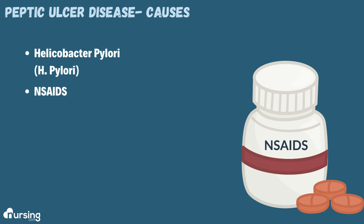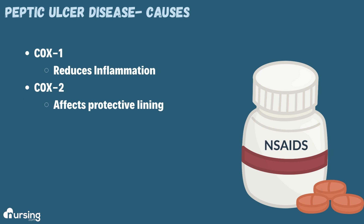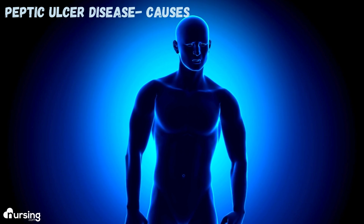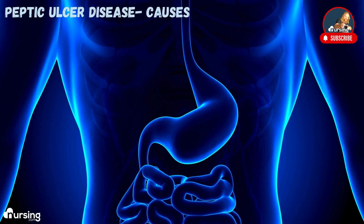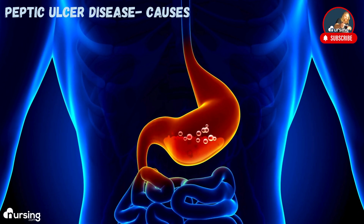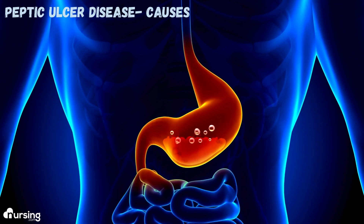NSAIDs are another one. NSAIDs work on cyclooxygenase-1 as well as cyclooxygenase-2. One is responsible for reducing inflammation — that's what NSAIDs are used for. But one of the other cyclooxygenases actually chews away that protective mucosal lining, allowing hydrochloric acid to escape into those submucosal tissues and start to chew away at our stomach lining.